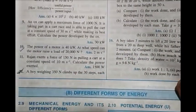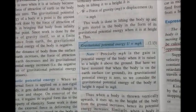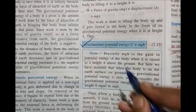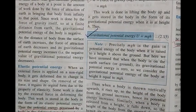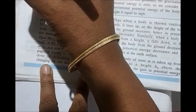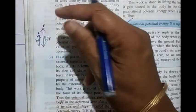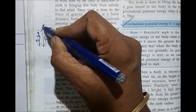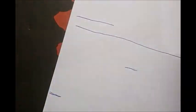Now the B part — different forms of energy. Start from page 30: gravitational potential energy. Formula: U = mgh. If a body moves from height h1 to height h2, the gain in potential energy = mg(h2 - h1).